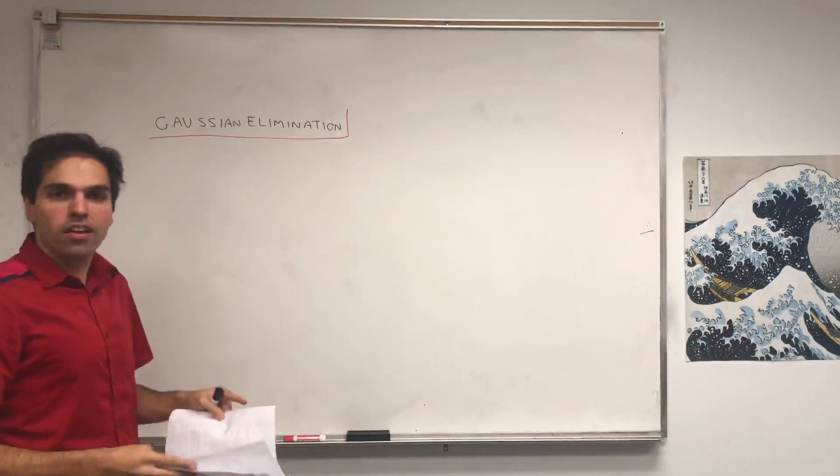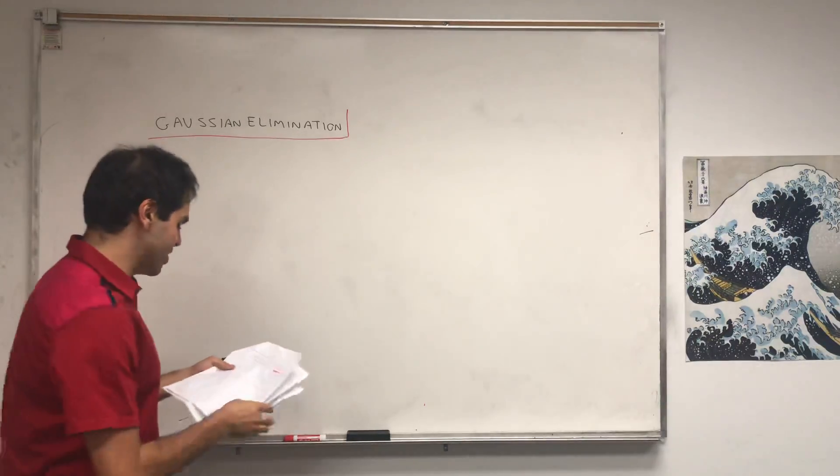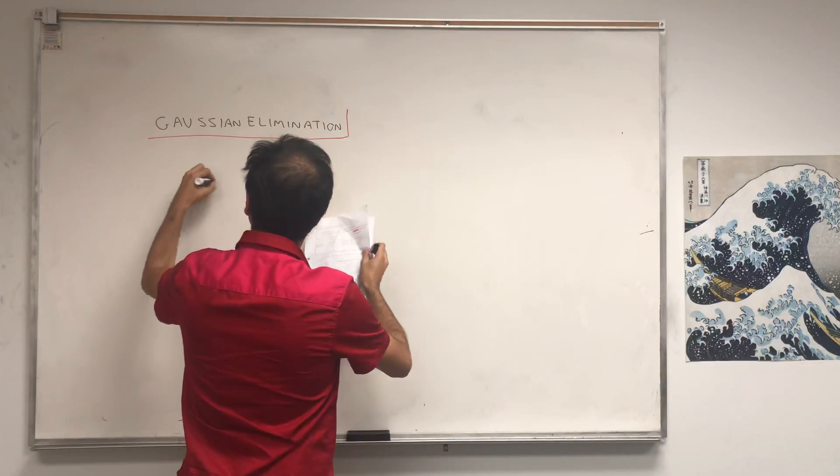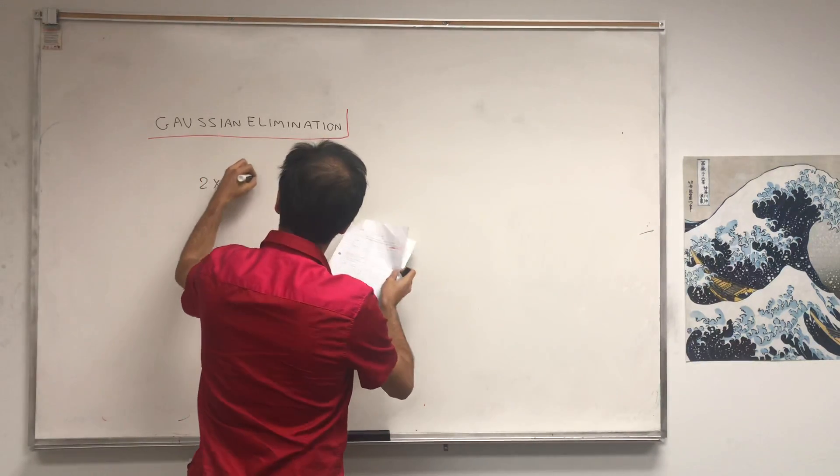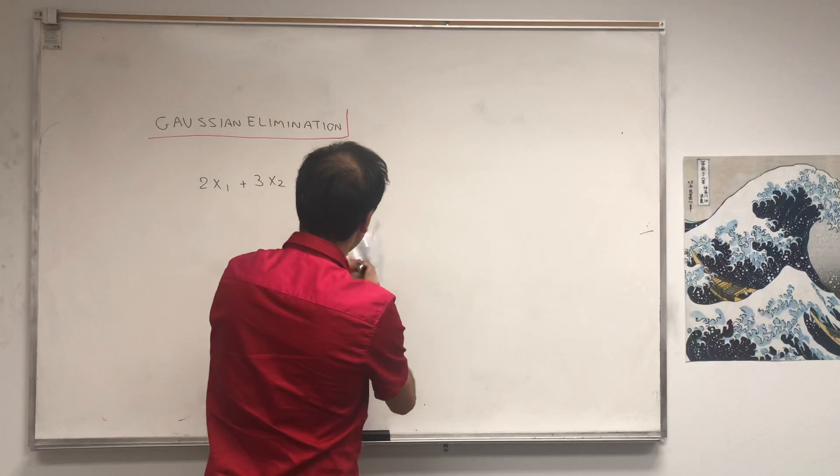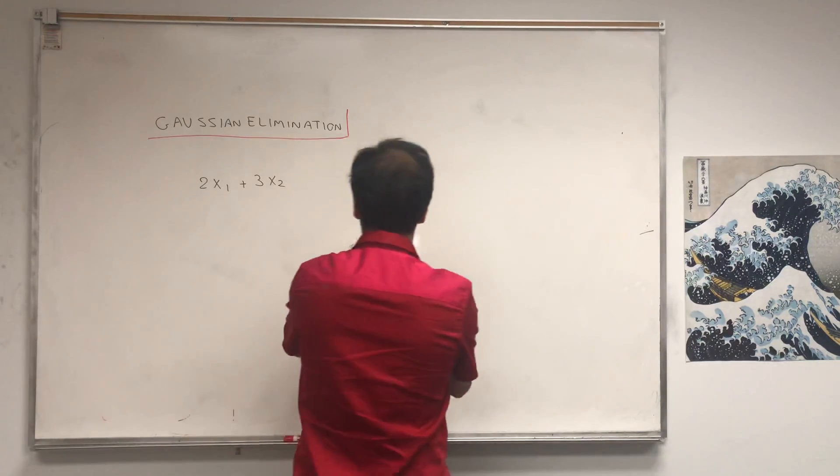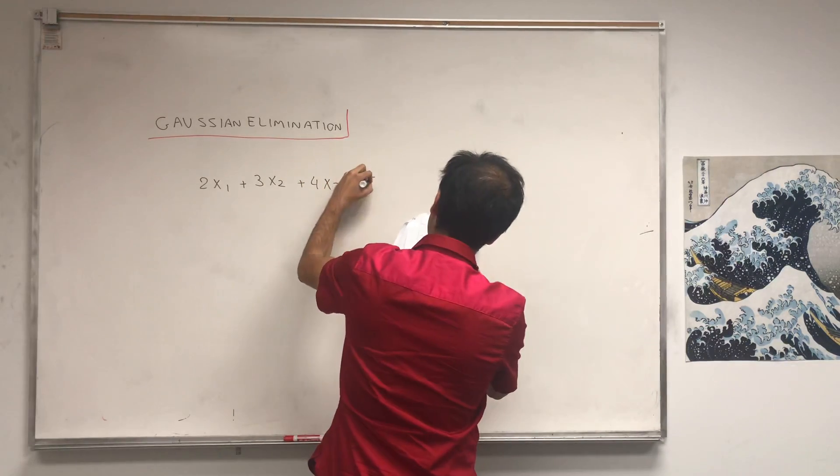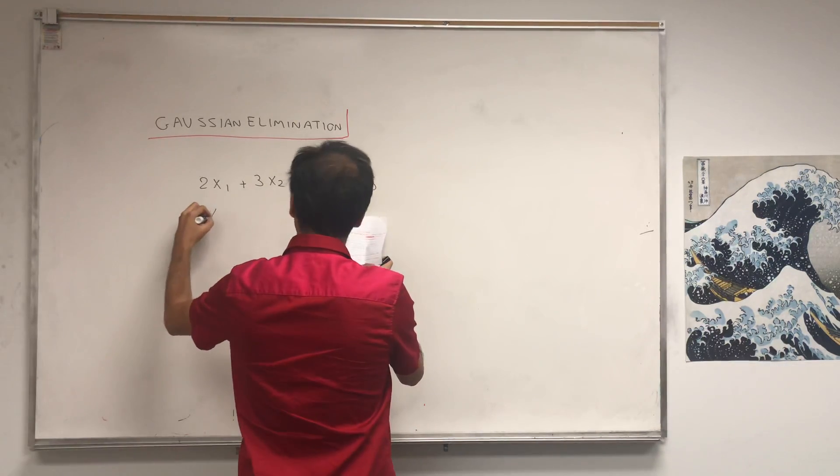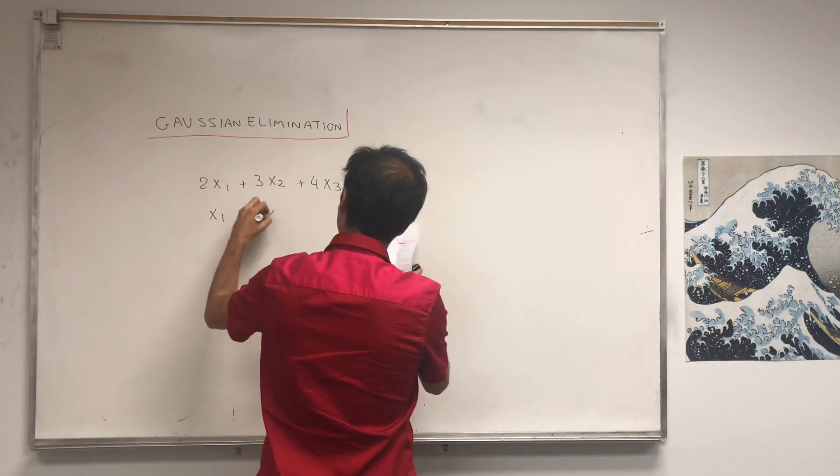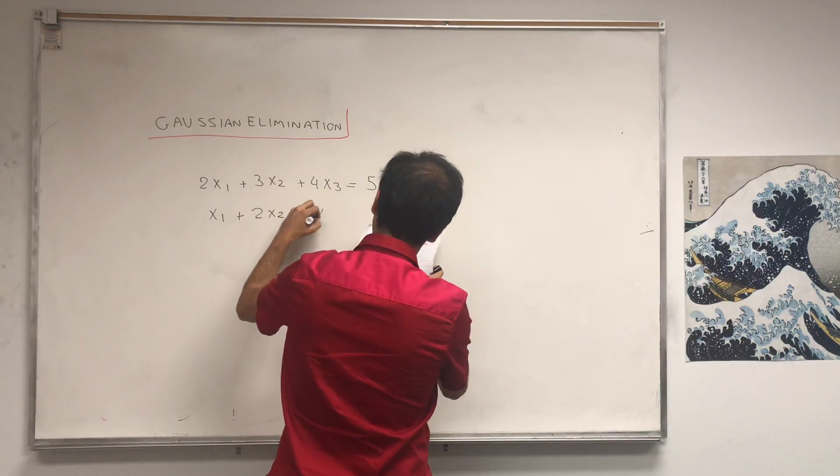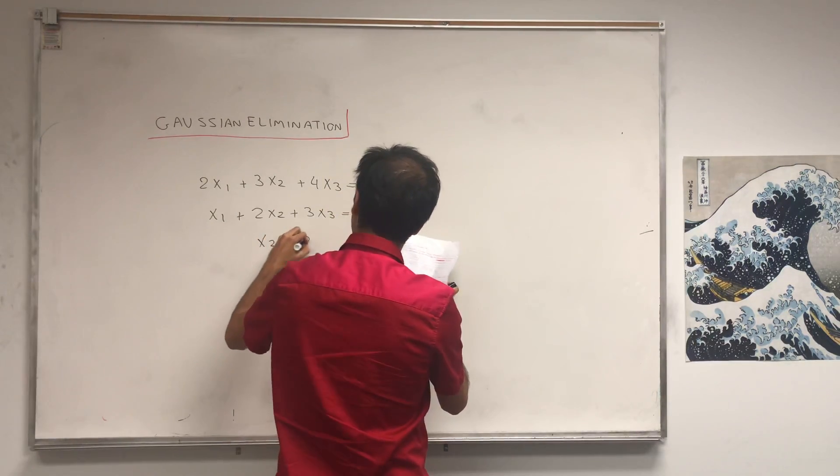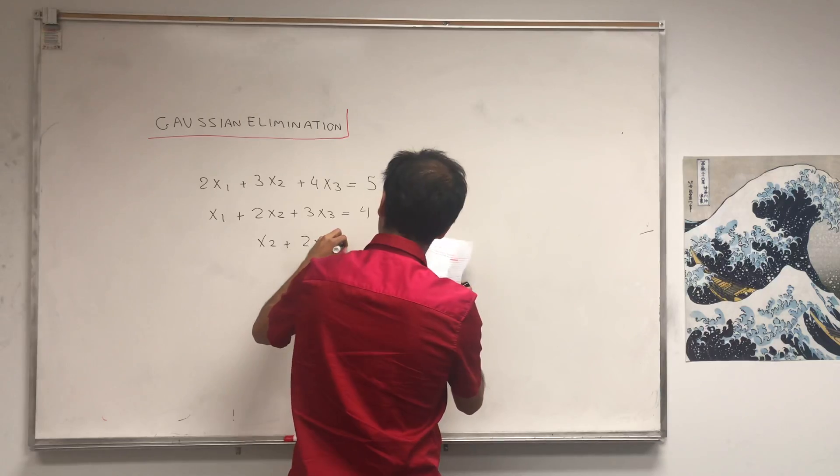So as a model, consider the following equation that we'll solve: 2x1 plus 3x2 plus 4x3 equals 5, and then x1 plus 2x2 plus 3x3 equals 4.